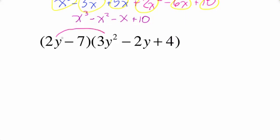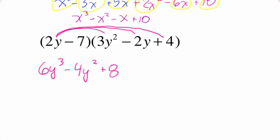Let's start off with pink. We're going to multiply 2y by everything in the trinomial. So 2y times 3y squared is 6y cubed. 2y times negative 2y is negative 4y squared. And then 2y times positive 4 is plus 8y.